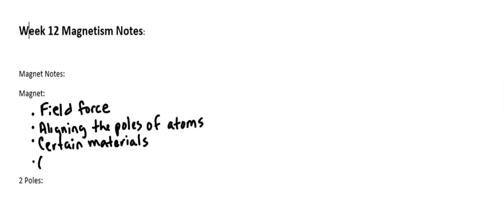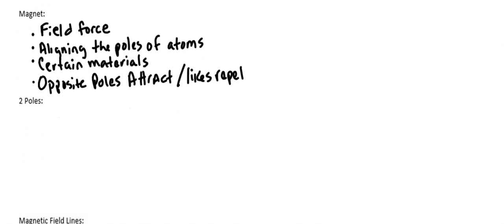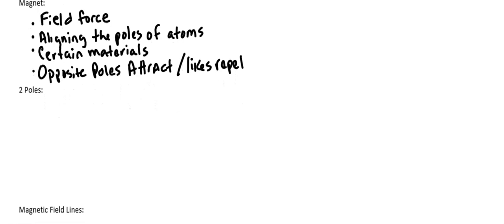And then lastly, when we look at magnets, opposite poles attract and likes repel. So that's old news. That's a piece that you guys have probably known for quite some time. So we have two poles in a magnet. We usually identify them as north and south.